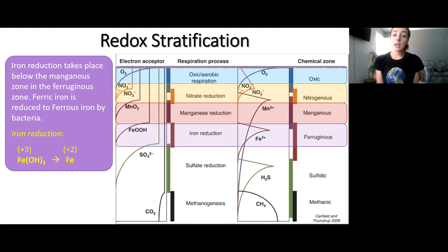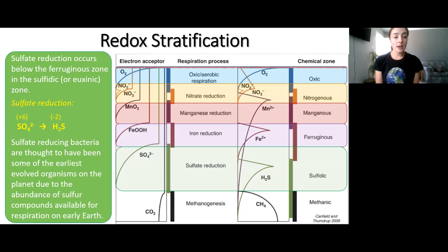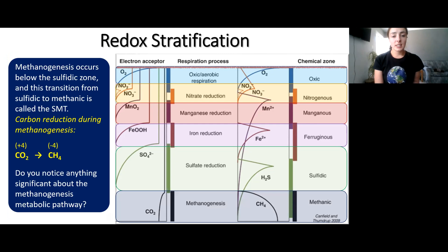Below this, you have the ferruginous zone where iron reduction occurs. In iron reduction, ferric iron — plus three oxidation state — is reduced to ferrous iron, with an oxidation state of plus two. Below this, you'll have sulfate reduction, where sulfate — sulfur with an oxidation state of plus six — is reduced to sulfide, sulfur with an oxidation state of minus two. This is quite a jump in oxidation states relative to the others. The last zone is the methanic zone, where methane is produced by methanogenesis by methanogens, which reduce the carbon in carbon dioxide from a plus four oxidation state to a minus four oxidation state in methane.